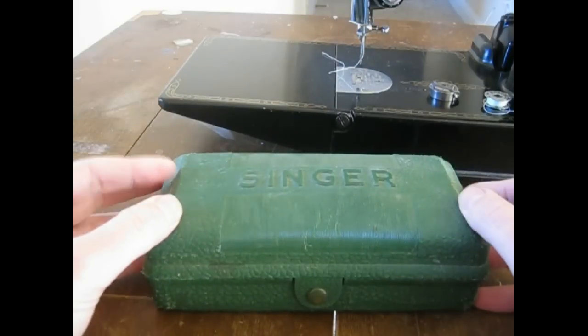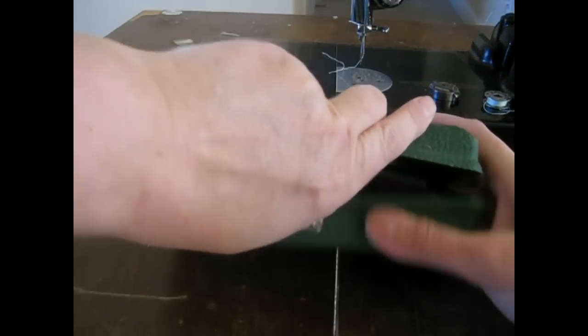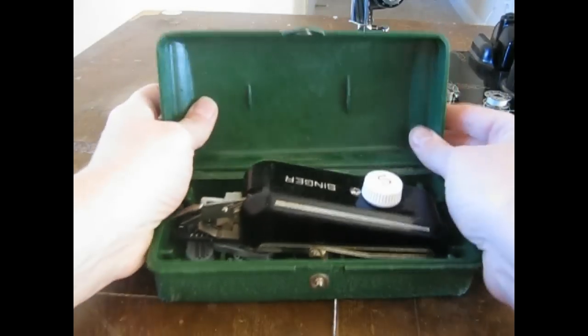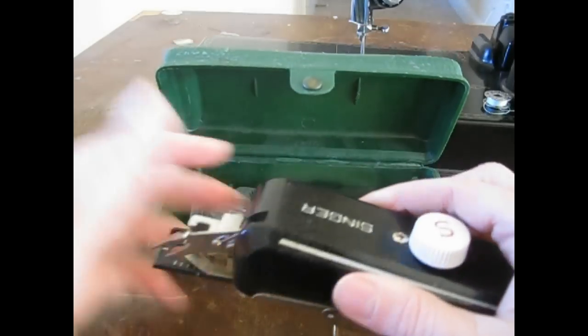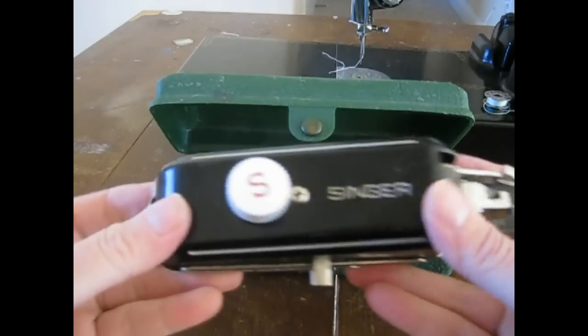This, I believe, will also work on the Kenmore. Anyway, open it up. Use the parts you need to have. Obviously, the button holer itself. Alright, let's put it so it's right side up. There we go.